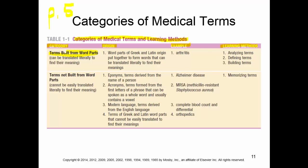For terms built from word parts, the word parts are Greek and Latin, and you can put those together to translate a word. For example, arthritis: 'arth' stands for joint, 'itis' stands for inflammation — so you can identify it as inflammation of a joint. The learning strategies are analyzing, defining, and building. Whereas terms not built from word parts — such as eponyms, acronyms, modern language terms, and things that just can't be translated, like Alzheimer's disease, MRSA, complete blood count differential, and orthopedics — don't easily translate. Unfortunately, the way we get around this is memorizing, which is why we'll spend a lot of time with study skills and strategies in this class.